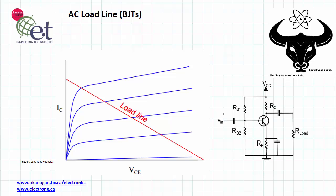I'm David Williams and in this episode I want to talk about AC load lines for BJT circuits. To start off with I just want to refresh your memory about DC load lines. Let's assume that we've got a DC load line, and what this represents is the range of valid values for IC and VCE when we're looking at only the DC portion of a circuit like this right here.